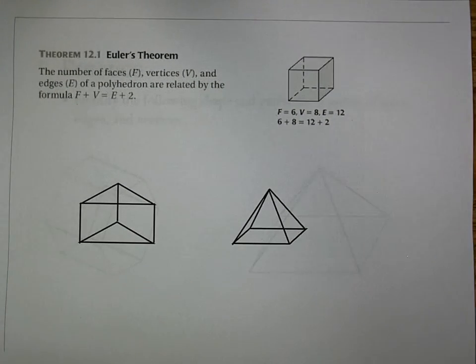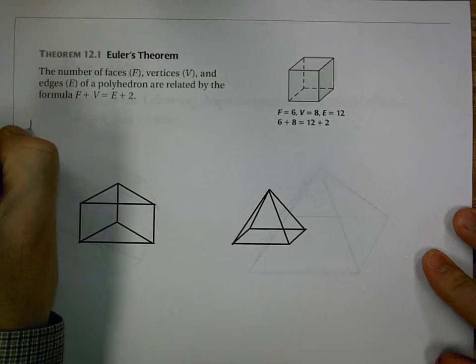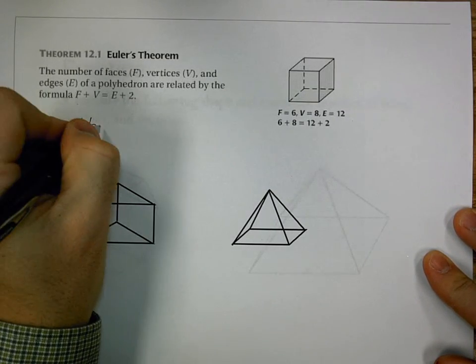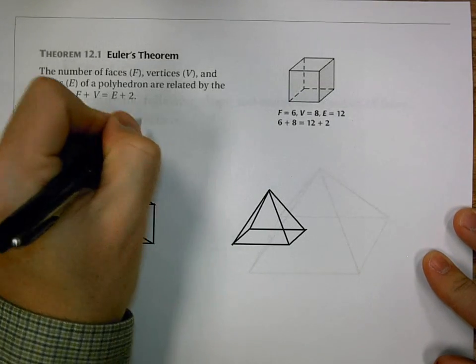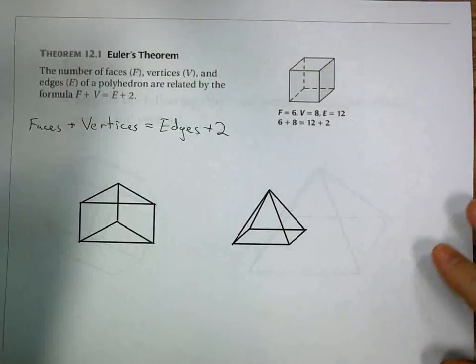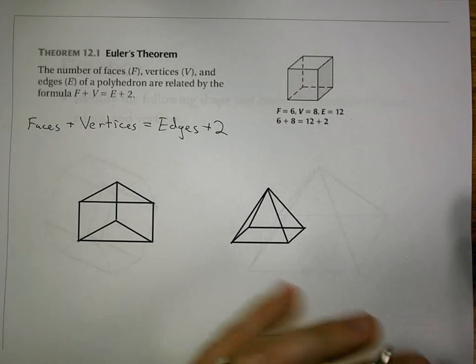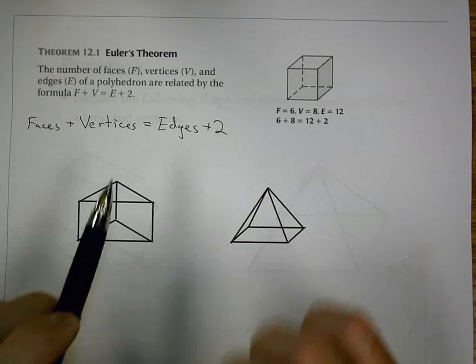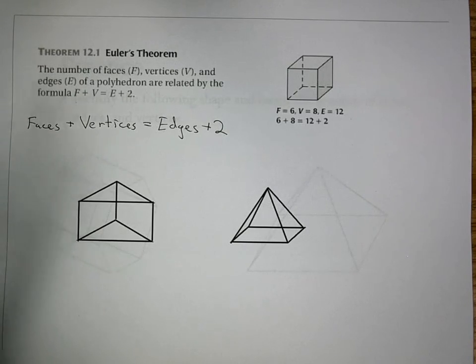Now, also in this section we're going to have an introduction looking at Euler's Theorem. And this is a relationship between the number of faces, vertices, and edges within a polyhedron. Now, this relationship always exists. And that's the number of faces plus the number of vertices is equal to the number of edges plus two. So, we can look at our object, we can count, and it should come out to give us a true statement where both are equal to each other.